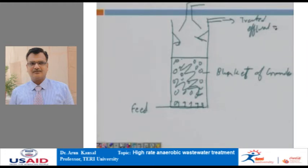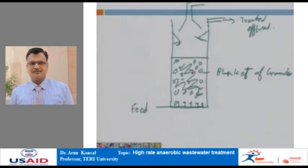A major advantage is that UASB technology requires less investment compared to fixed film fixed bed reactors, since it does not require any inert media — the overall volume requirement and capital cost are therefore less. However, the startup period of a UASB reactor is longer than other reactor configurations. It requires sufficient time for granular seed sludge to form, there is significant washout during initial phases, and if there are toxic shock loads or variable flow rates the granules tend to disintegrate, disrupting the process.